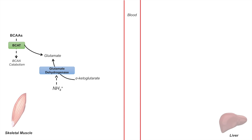Other processes in the muscle, including purine and pyrimidine breakdown, can also lead to ammonium production. That ammonium can be incorporated onto an alpha-ketoglutarate as well, with the enzyme glutamate dehydrogenase, also forming glutamate. As these processes continue, we get a buildup of glutamate in the skeletal muscle.